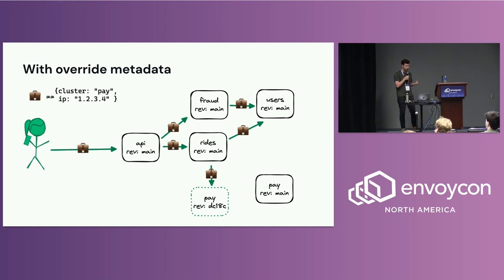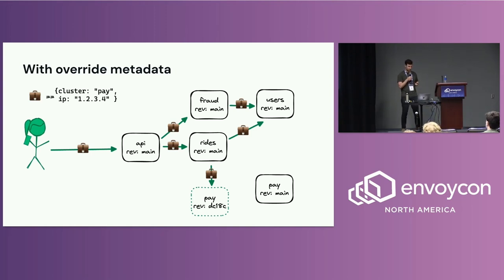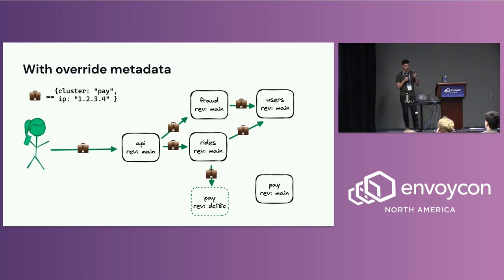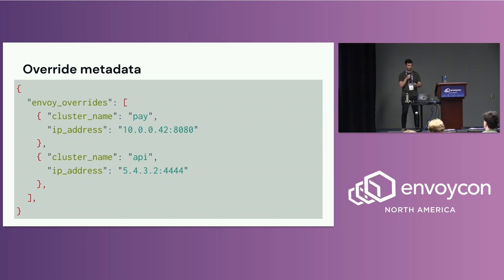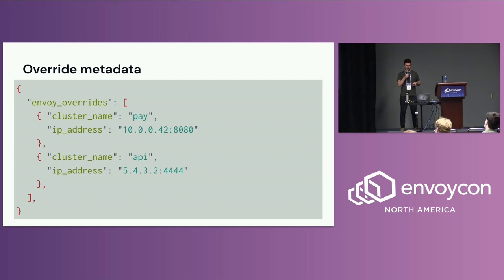To actually route to an offloaded pod, we need override metadata. An example: in the metadata embedded in the request, we specify the upstream cluster — roughly the service we're overriding — and its IP address. Here it's the pay service at 1.2.3.4. The override metadata is technically a protobuf but essentially a JSON blob: if you have a set of overrides for the duration of a request, you say 'for this service, rather than going to the blessed staging version, go to this IP:port instead.' The question was where to put this data and ensure it's always available.